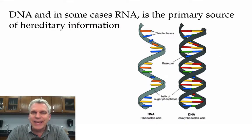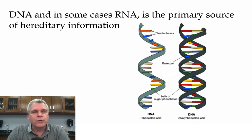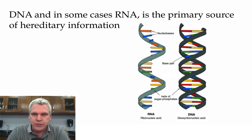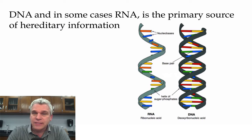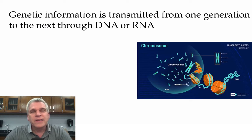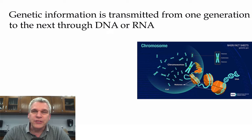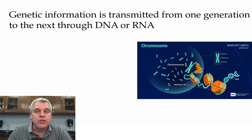We know that DNA, and sometimes RNA, is the primary source of hereditary information. Remember that DNA is double-stranded, RNA is a single-stranded type of nucleic acid. And what it does is transmit this genetic information from one generation to the next.